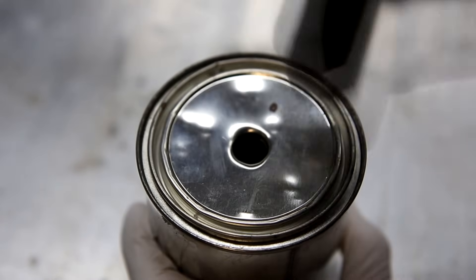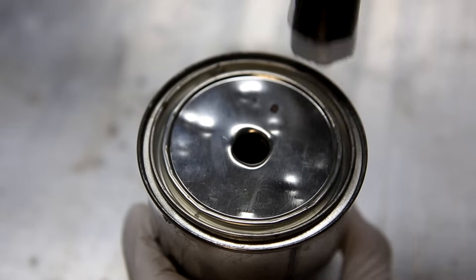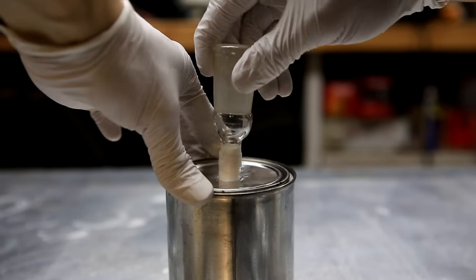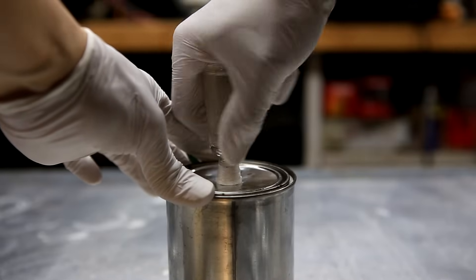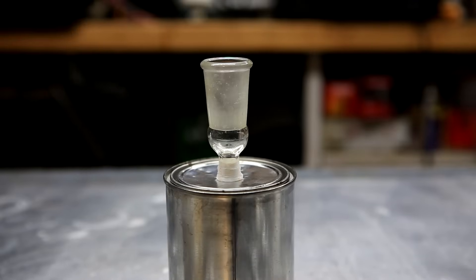This hole was made by simply hammering a screwdriver through the lid. Then a glass adapter with a generous amount of teflon tape was stuffed into the hole. It was made sure that the seal was as tight as possible.